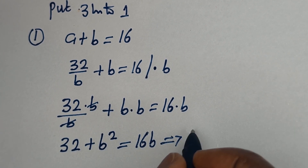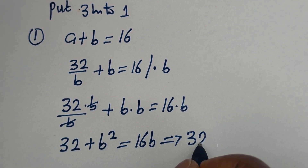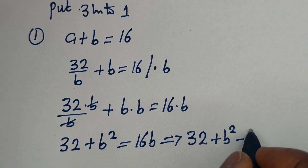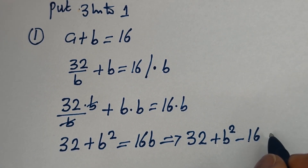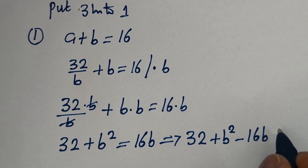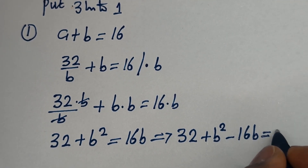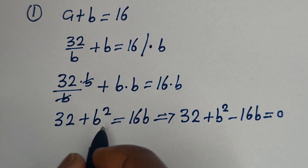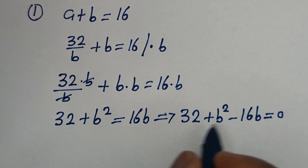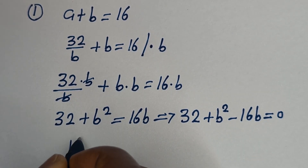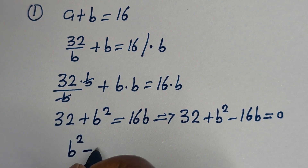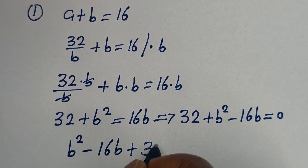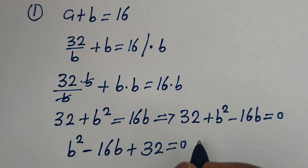And this is the same thing as 32 plus B squared minus 16B is equal to 0. Then we have B squared minus 16B plus 32 is equal to 0.